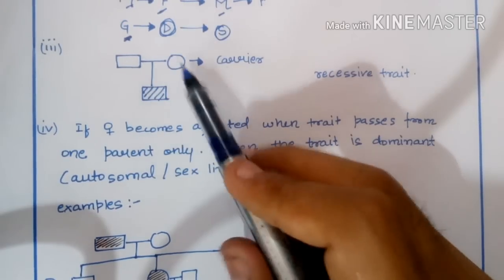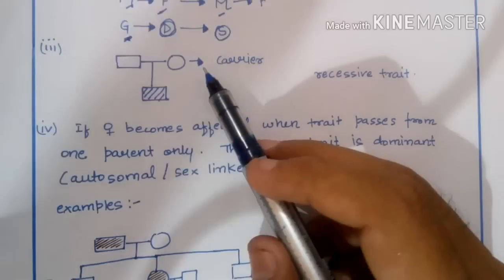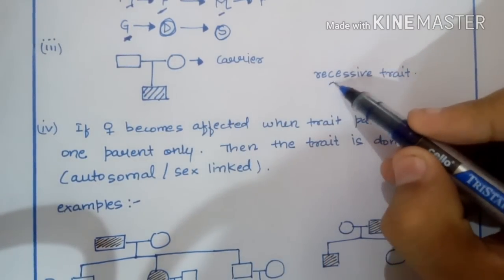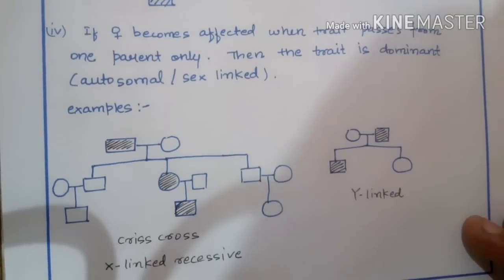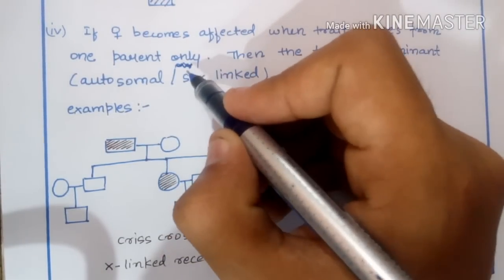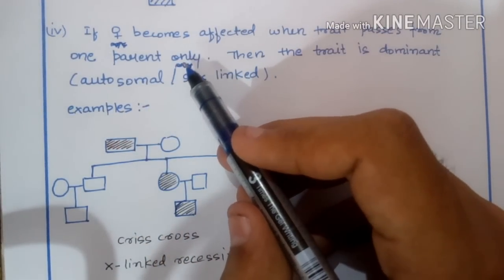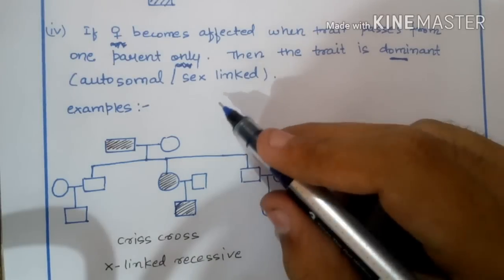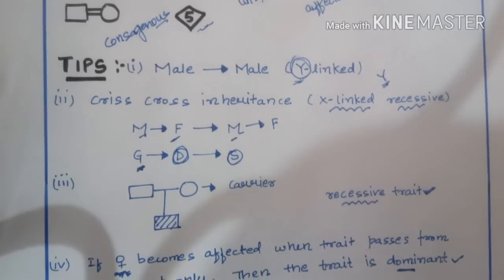Tip 3: If both parents are unaffected but their children are affected, the female parent is a carrier. This is a recessive trait. The carrier female is not diseased but passes the gene to the next generation. Tip 4: If the only affected child is female, and the disease gene is coming from only one parent, then the trait is dominant — either autosomal dominant or sex-linked dominant.